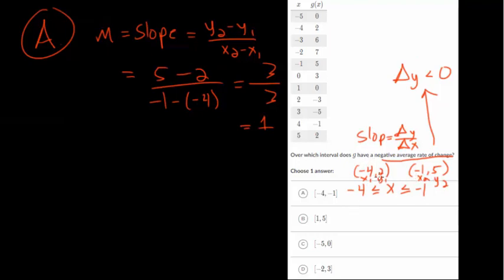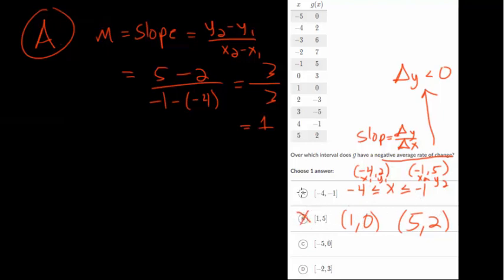You don't have to use the formula every time — you can just think it through. As x increases, is y going down? If it is, you have a negative average rate of change; if y goes up, it's positive. For interval B: when x is 1 the y value is 0, and when x is 5 the y value is 2. As x goes from 1 to 5, y goes from 0 to 2 — both increase, so this is a positive average rate of change.